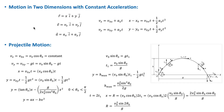Now let's consider motion in two dimensions with constant acceleration. For motion in two dimensions, the displacement, velocity, and acceleration vectors are each given by equations with both an x and a y component. The unit vectors i and j represent the x and y directions respectively.